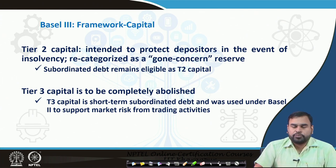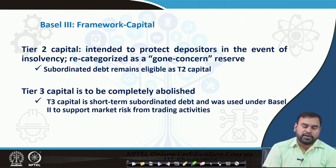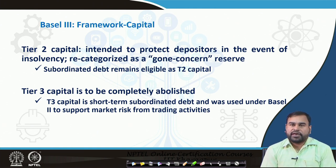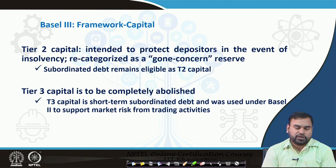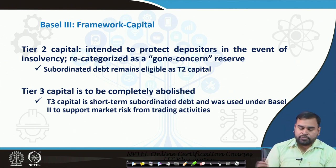The tier 2 capital's objective is to protect depositors in the event of insolvency and it is recategorized as a going-concern reserve. At any point of time, depositors should not have any problems with their liquidity requirements, so the tier 2 capital should be kept at a particular level to absorb any losses the bank is expected to make. The concept of tier 3 capital was completely abolished by Basel 3 — the short-term sovereign debt used under Basel 2 to support market risk is not present in Basel 3.